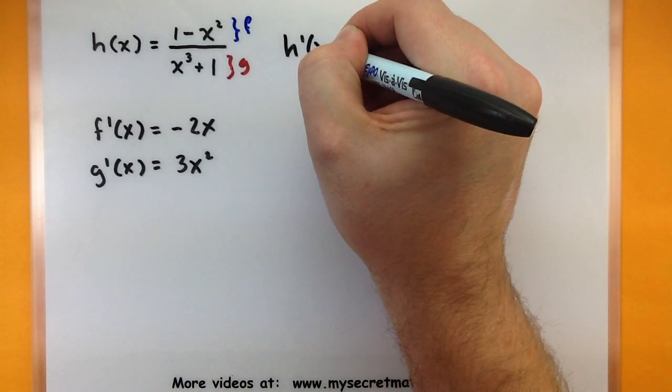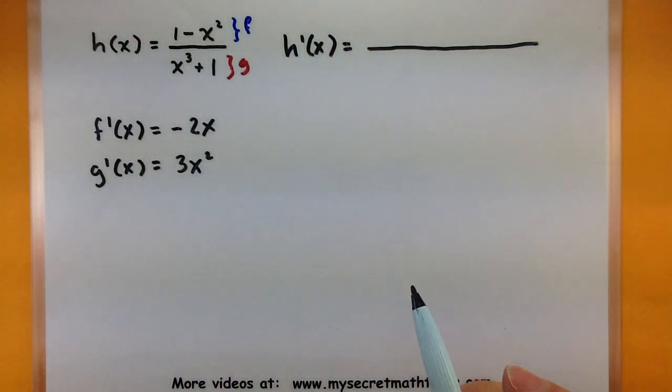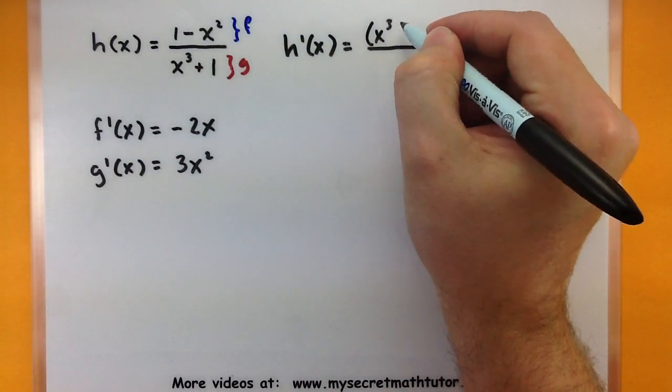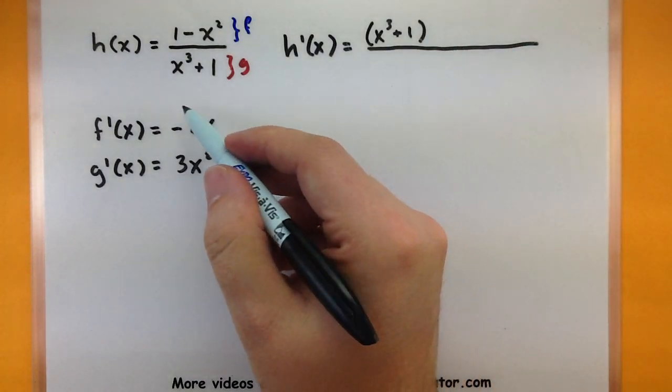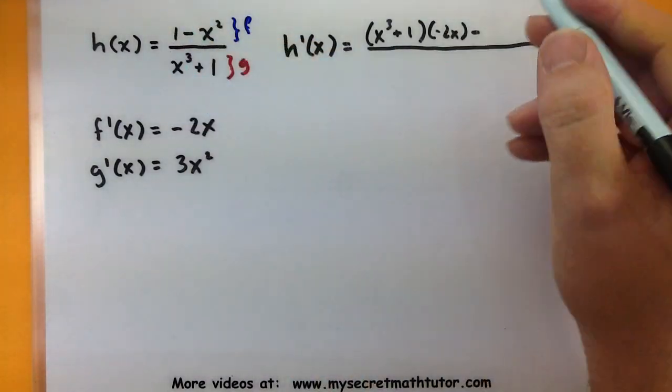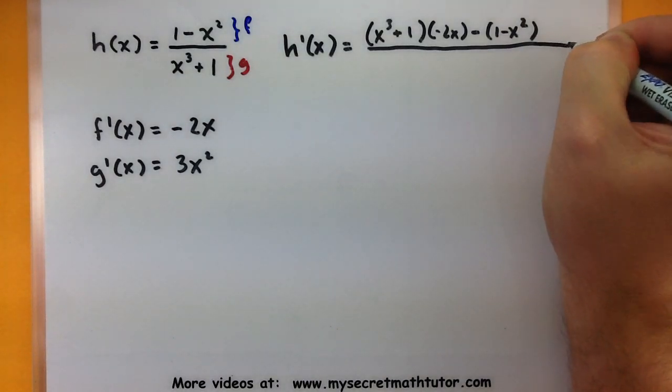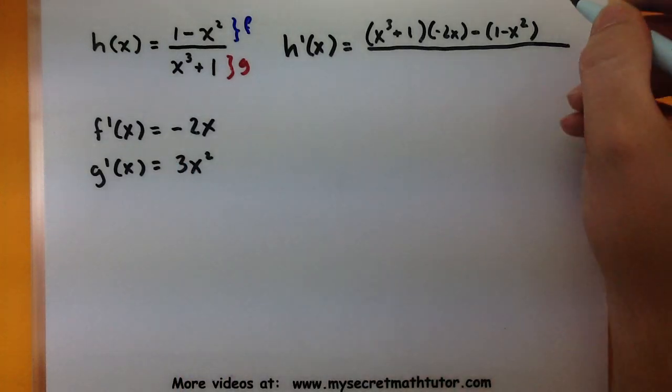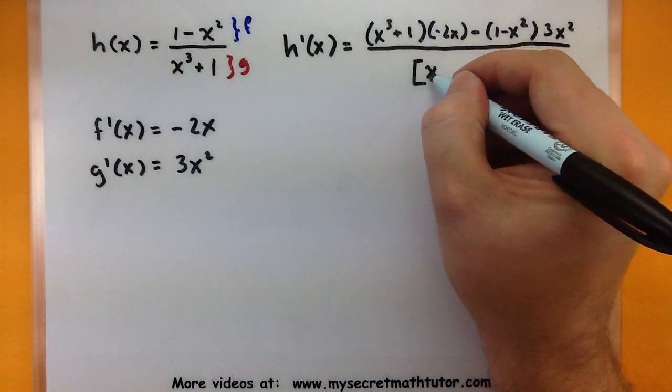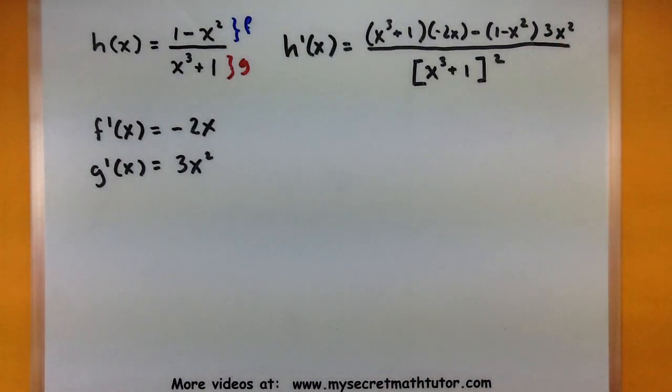So, the derivative of h. Let's see if we can build this. So, low d high minus high d low, all over low squared. Okay, not bad.